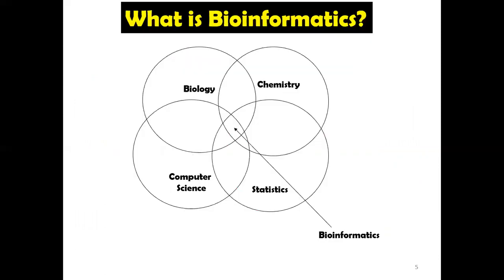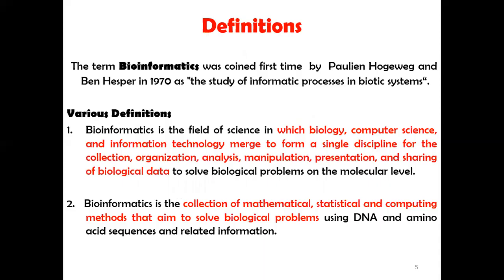Bioinformatics deals with some part of biology, some part of chemistry, some part of statistics, and some use of computer science, and together this emerges as a new branch called bioinformatics. The term bioinformatics was first coined by Pauline Houtweg and Ben Hesper in 1970 as the study of informatic processes in biotic systems.